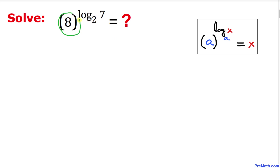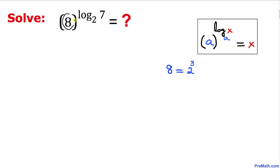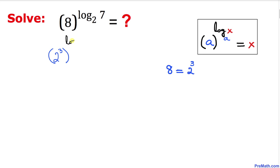Here's our next question. This time our base is 8 and our exponent is log of 7 with base 2. If we compare this with our formula, the base 8 and the logarithmic base 2 are not the same, so we need to manipulate this problem. Now, 8 can be written as 2 to the power 3, so we rewrite it as 2 power 3, then raised to the power log of 7 with base 2.